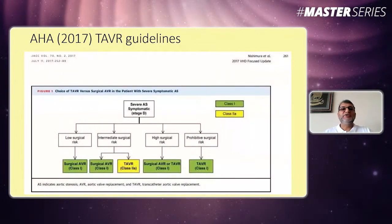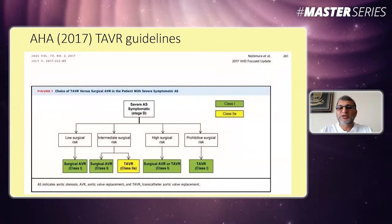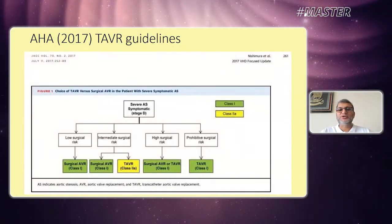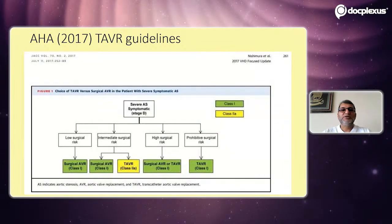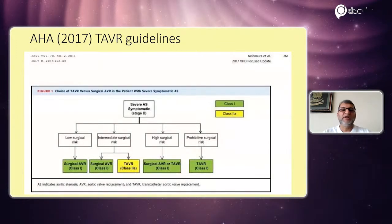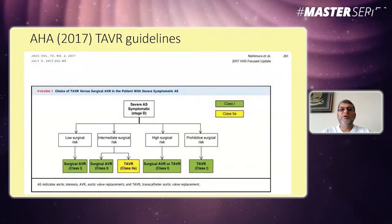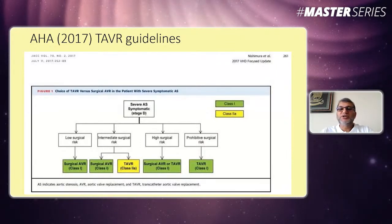AHA guidelines distinguish four risk categories: low surgical risk patients should go for surgical aortic valve replacement with the best results; intermediate surgical risk patients can be considered for TAVI (Class 2a); high surgical risk patients may go for surgical AVR or TAVI; and prohibitive surgical risk patients are meant for TAVI only.